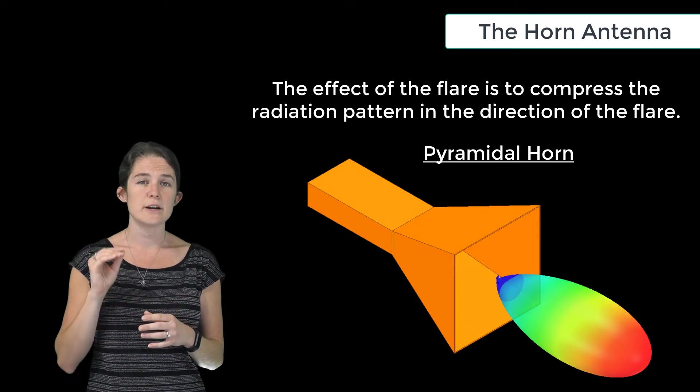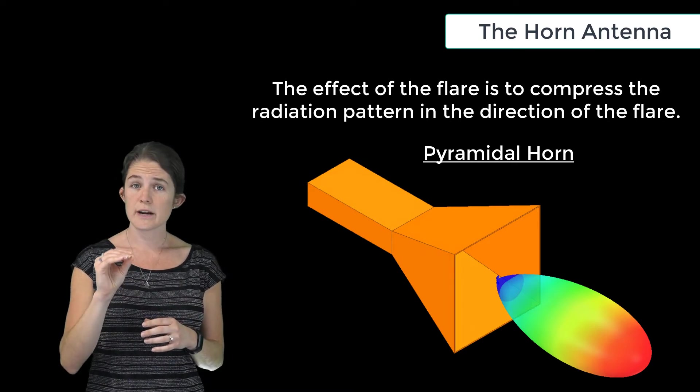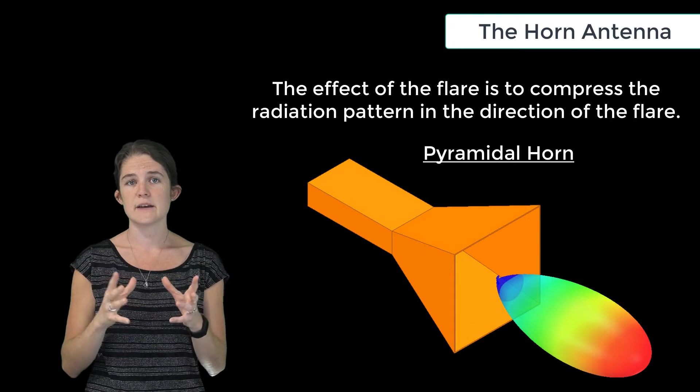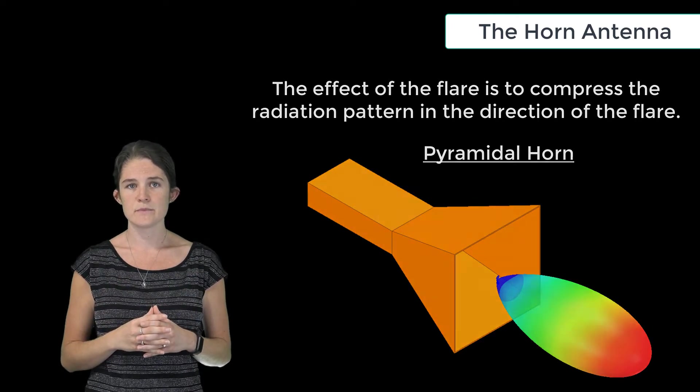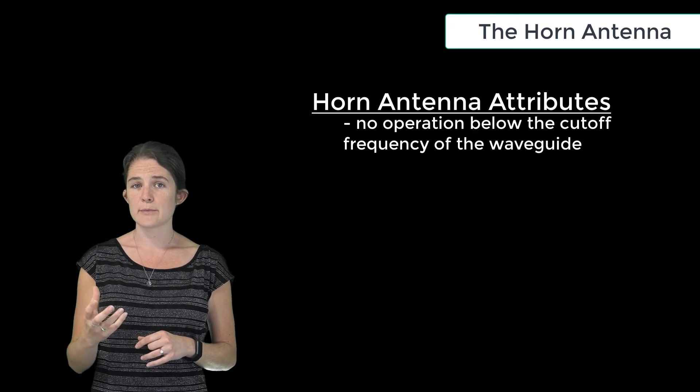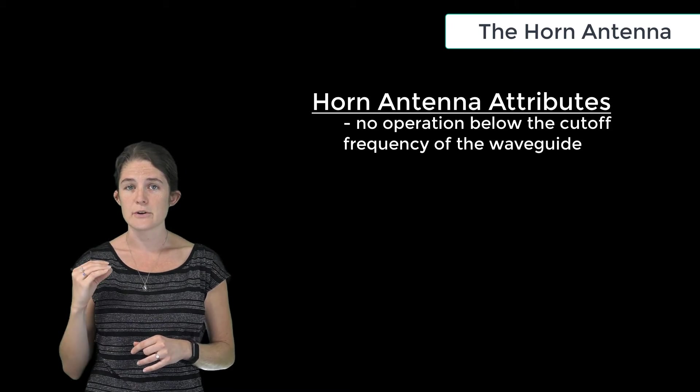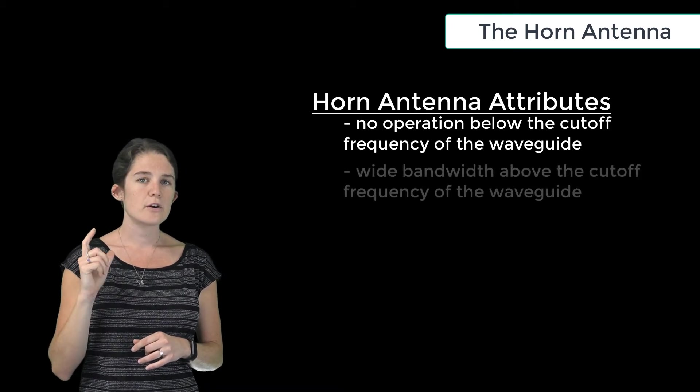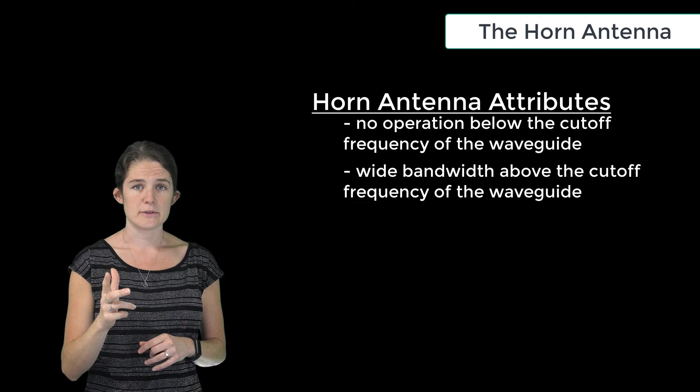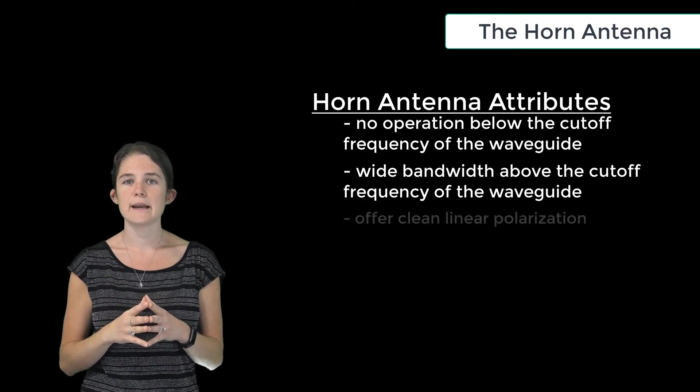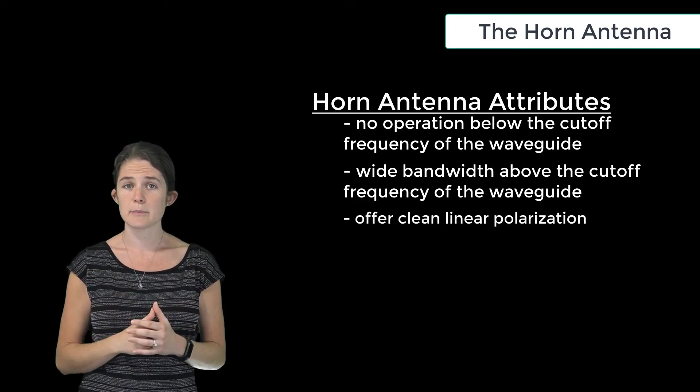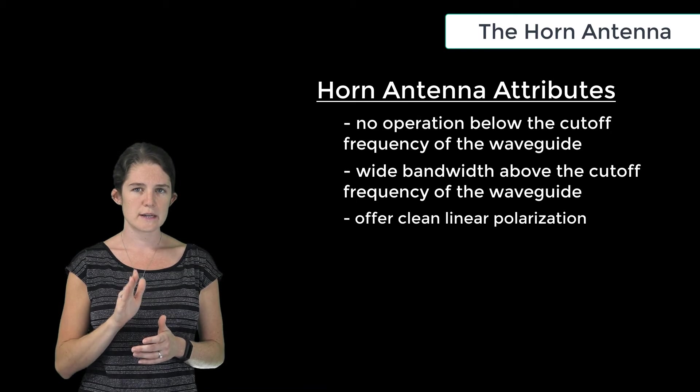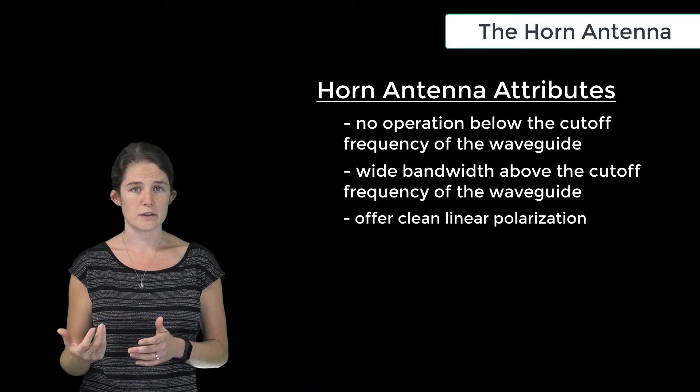Horn antennas cannot operate below the cutoff frequency of their feeding waveguide, but they are very wideband above that cutoff frequency. They typically radiate a very cleanly linearly polarized wave, which is oriented in the same direction as the electric field in the waveguide.